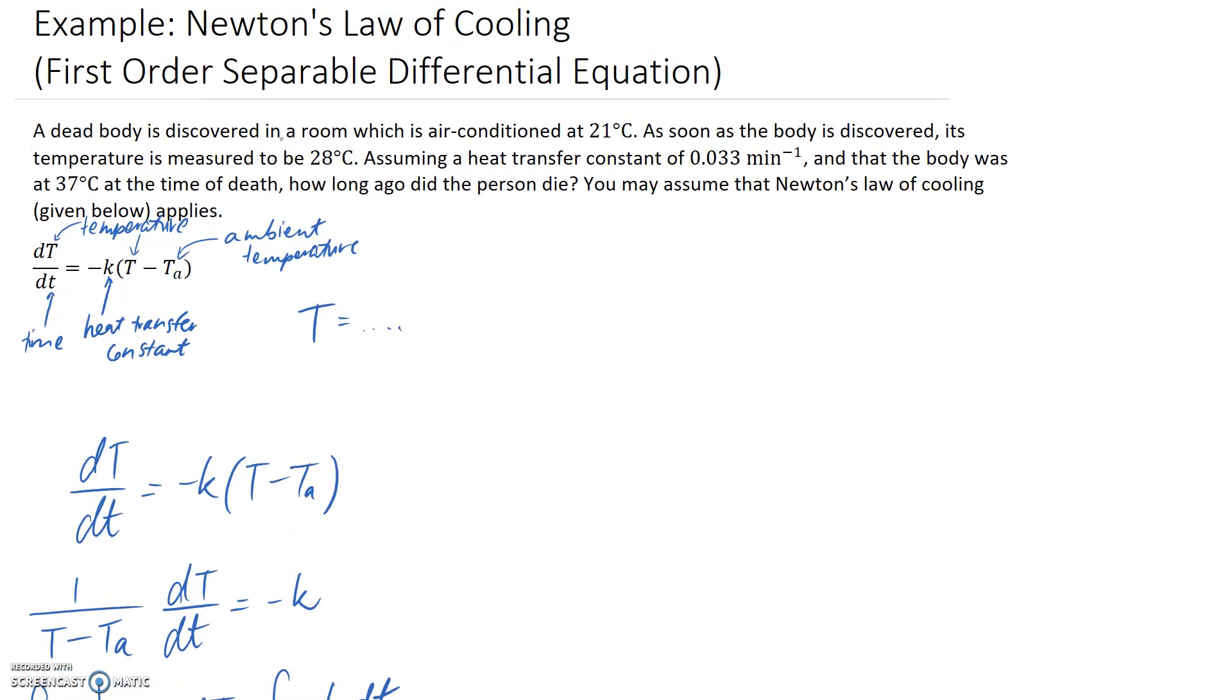So up here, we're told that our room is air-conditioned at 21 degrees. So what that's inferring is that the room temperature, or the ambient temperature, is 21. So that's one piece of information.